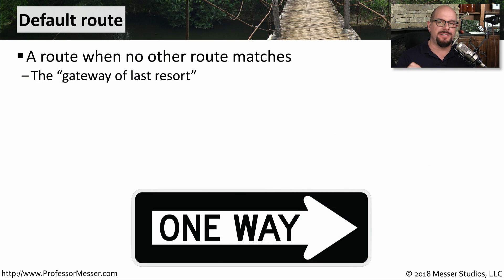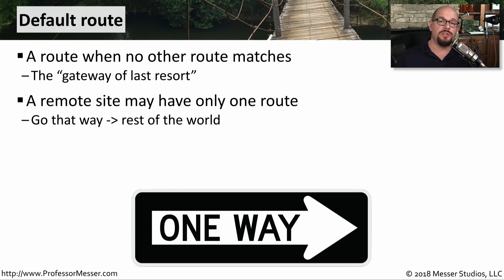There's a special kind of static route called a default route. This is a route you configure inside the router that says: if nothing else matches inside of our routing table, send the traffic this way. You might also see this referred to as the gateway of last resort. A default route is a very common configuration at something like a remote site, where there's only one way to send traffic out and one way to send traffic in. This means the router really doesn't have to make any decision about forwarding — if traffic is coming from the inside, it sends it to the outside, and if traffic is coming from the outside, it sends it to the inside.